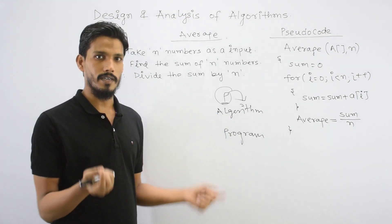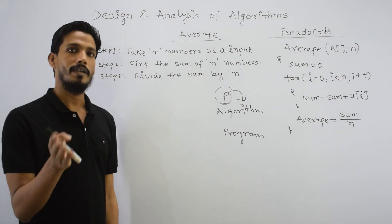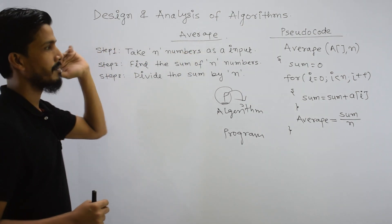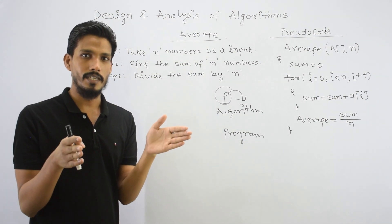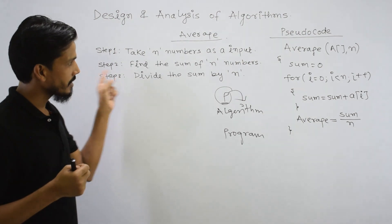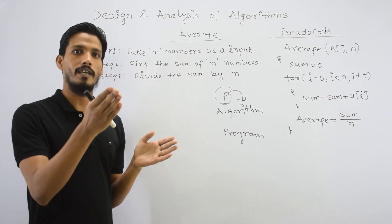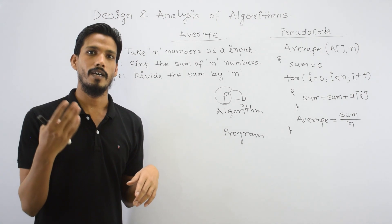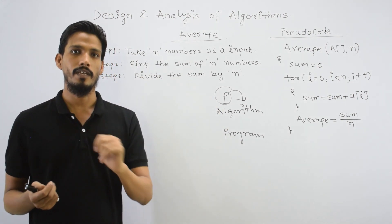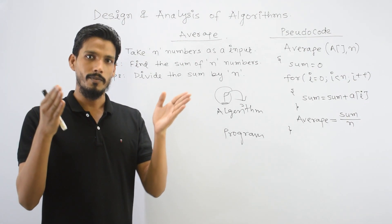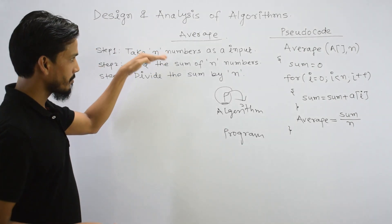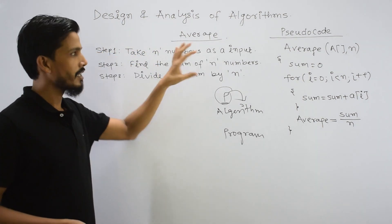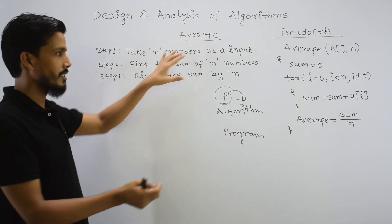Now we implement it in any programming language. Suppose we have a problem: we have to calculate the average. So we take some steps. Step 1: Take N numbers as input. Step 2: Find the sum — add the numbers to get the resultant value. Step 3: Divide the sum by N to get the average. Step by step — this is the algorithm, and we can write it in plain English and then convert it into any programming language.